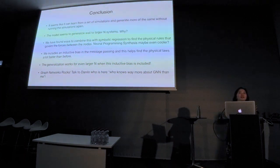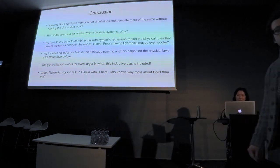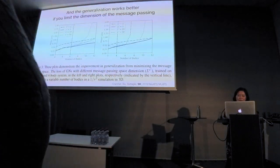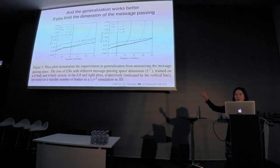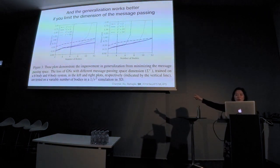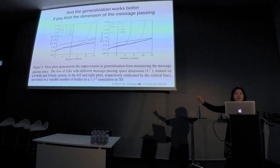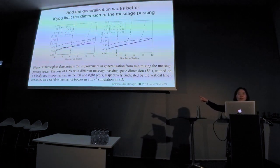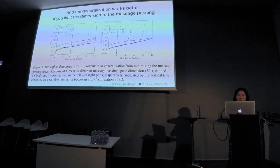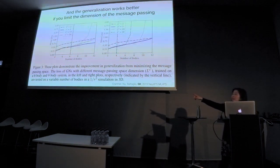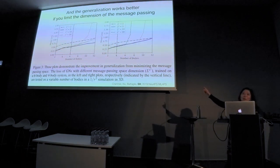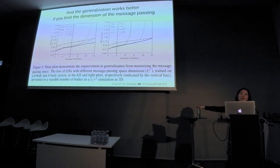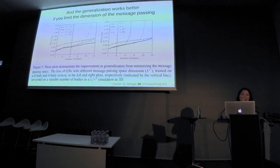Although for the right-hand plots, L=50 is doing worse than L=10. For the left-hand side it is true. This one was trained with six bodies on the left, and that was trained with four bodies on the right. The four-body one is probably more relevant because you're going further out from what your training system is — training with four and trying to generalize to twelve bodies.